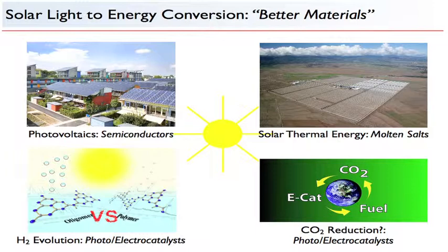I'm showing various sunlight-to-energy conversion examples, each connected to materials questions. In photovoltaics, that involves traditional or new semiconductor materials to optimize or invent. In solar thermal energy, a longstanding problem has been molten salts for thermal storage. There's also direct conversion of sunlight to fuels — hydrogen evolution is the prototypical example — but we need a catalyst material to make that work efficiently, and it's not yet economically viable.